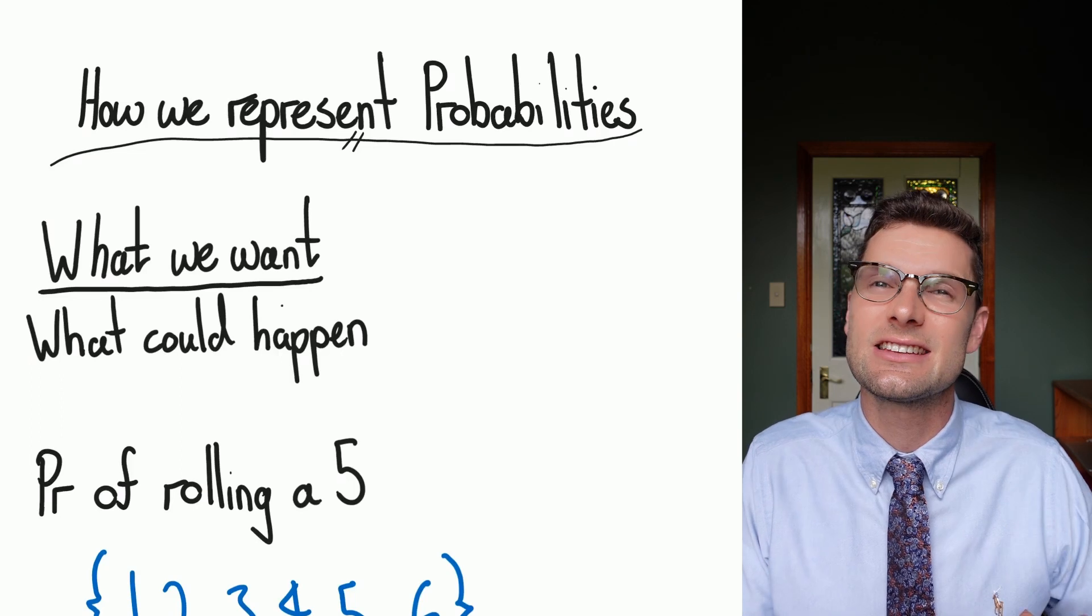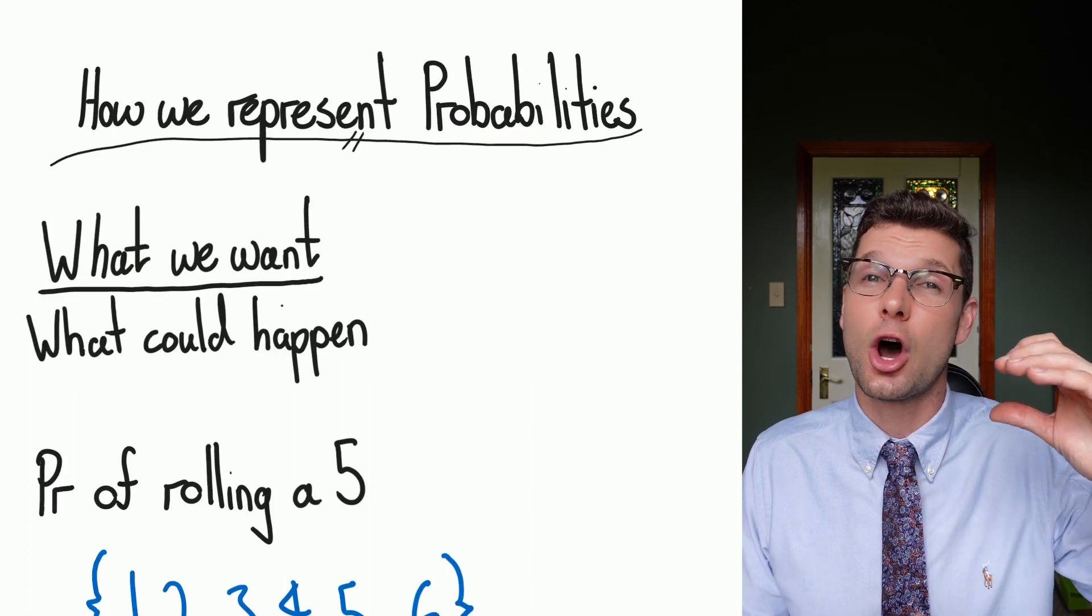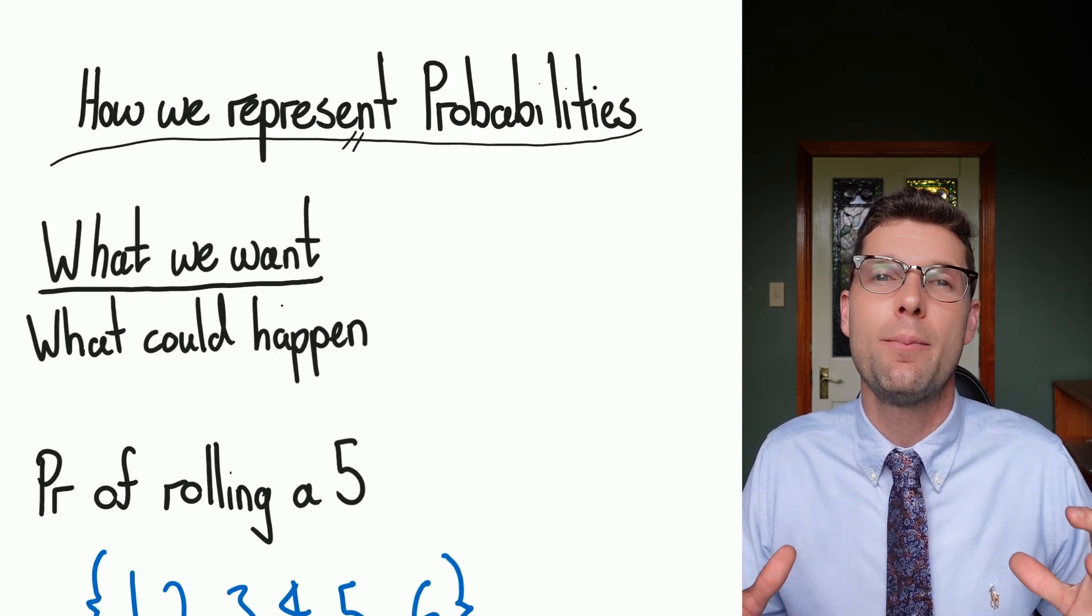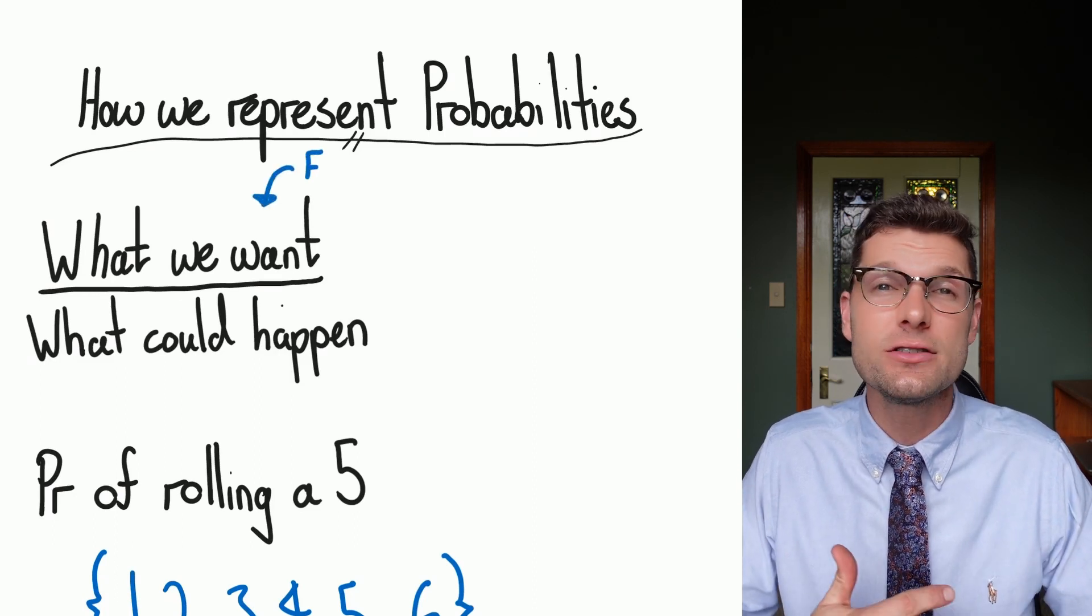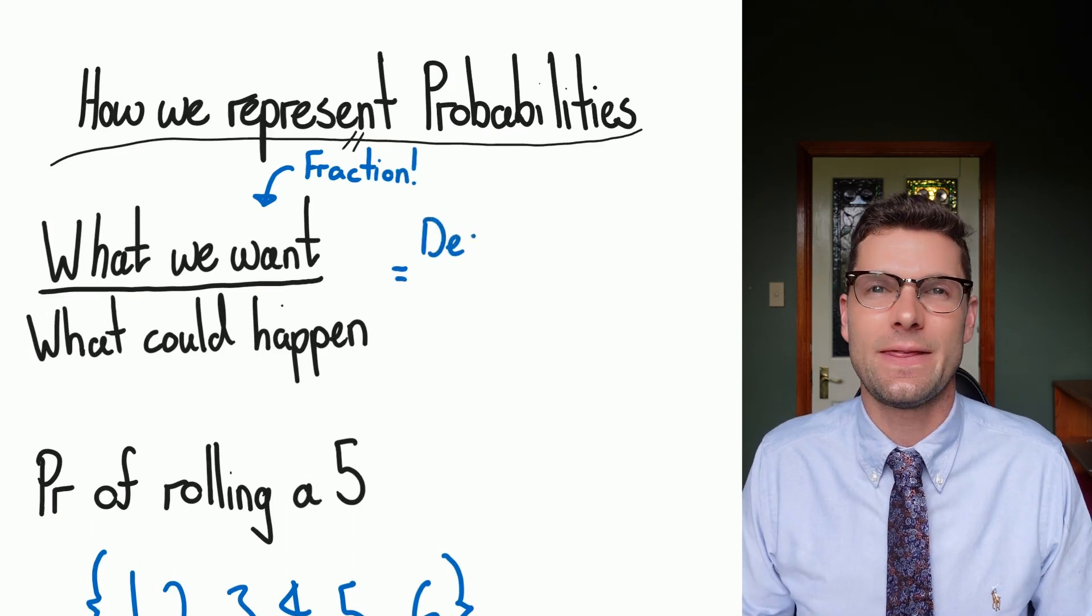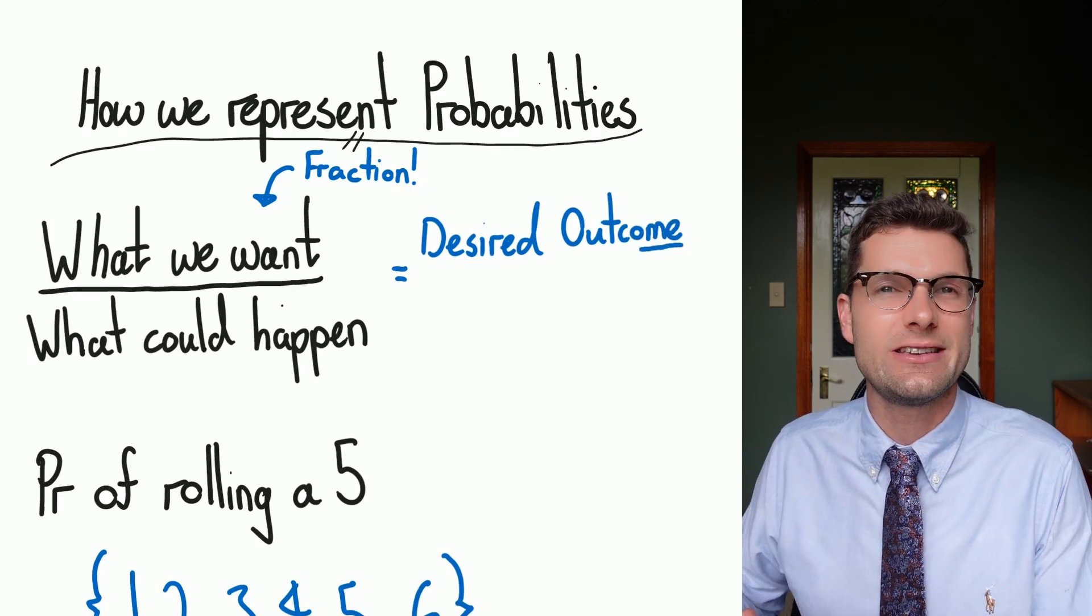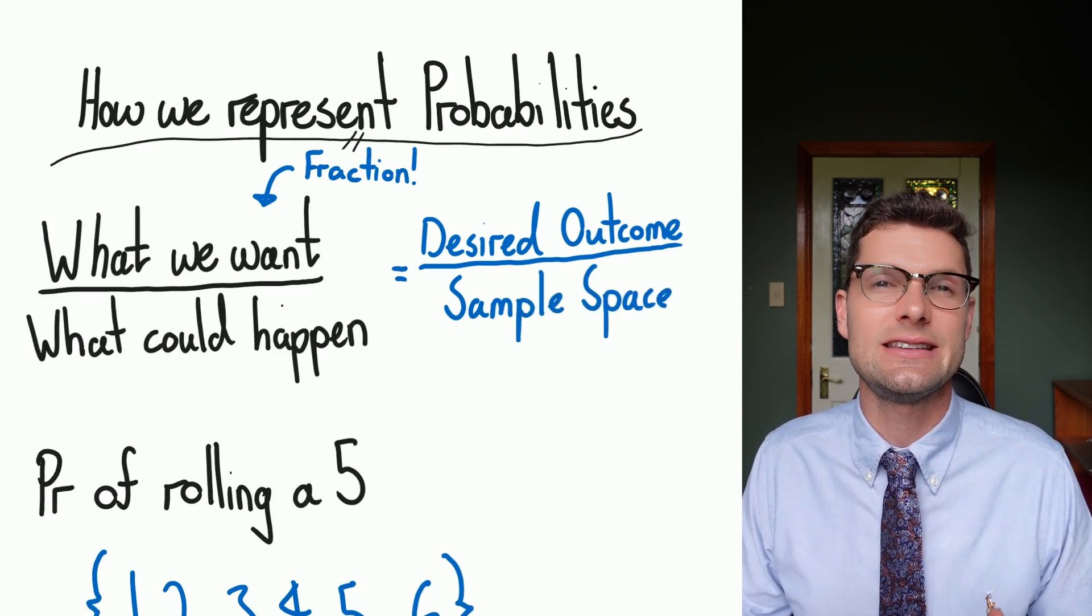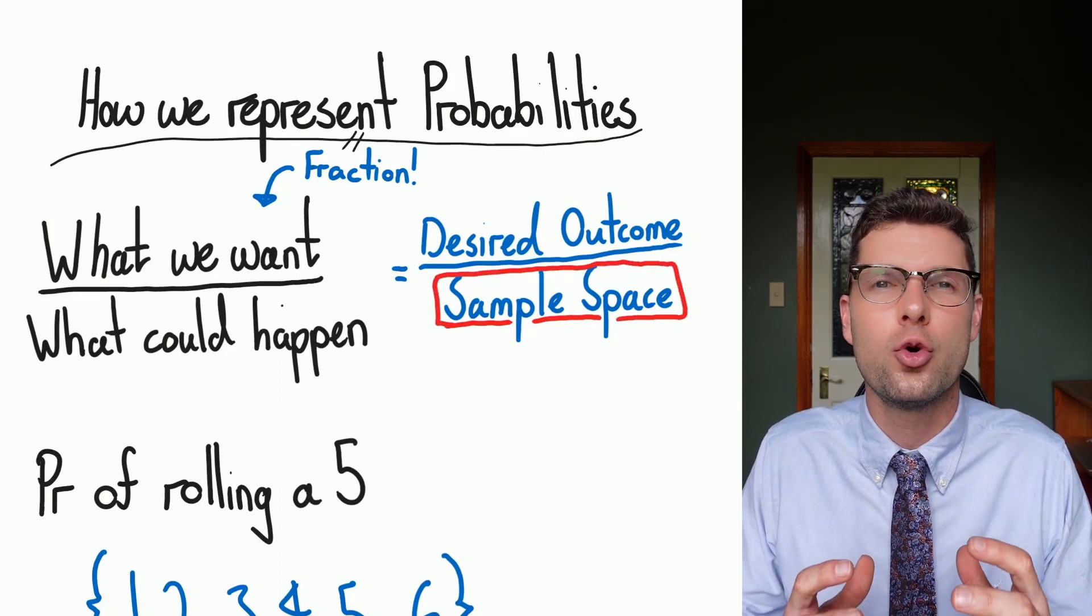So we've said that probability is assigning a numerical value to a chance outcome. So the way that we do this is we put on top of a fraction, what we want to see, and then divide that by anything that could possibly happen. So our probabilities are based in fractions. And then because of this, we can change them into percentages or decimals. Another way to think about this in more maths-y terms is that instead of saying what we want to see, we call this the desired outcome or a favorable outcome. And this is going to be divided by the sample space. This word sample space is an incredibly important term. It's just anything that could happen.